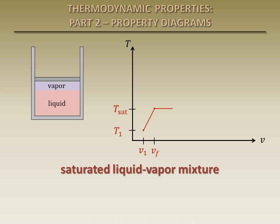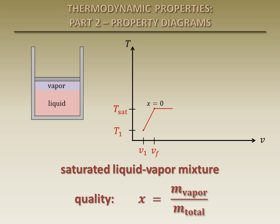This mixture is said to have some quality. The quality is a number between 0 and 1 and is defined as the ratio of the mass of the vapor over the total mass of the mixture. The quality of a saturated liquid is 0 because there is no vapor yet. As more energy is added, more of the liquid vaporizes, increasing the specific volume.